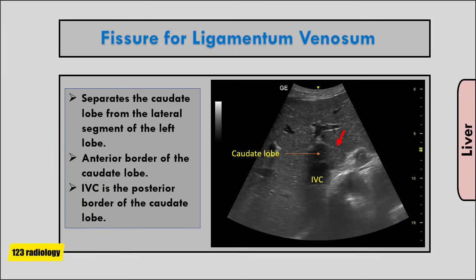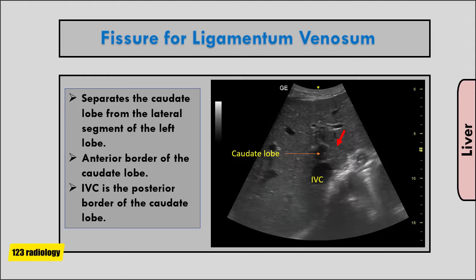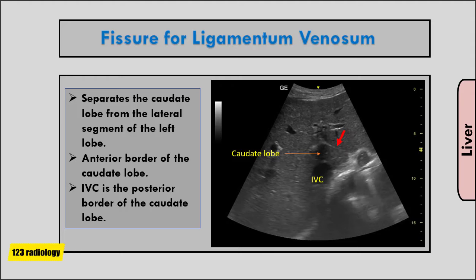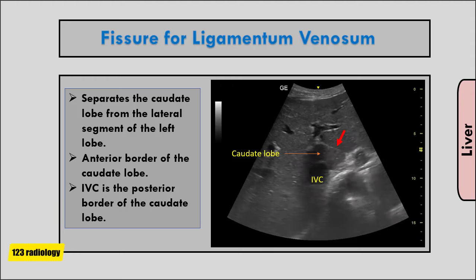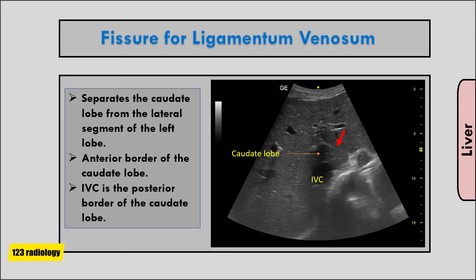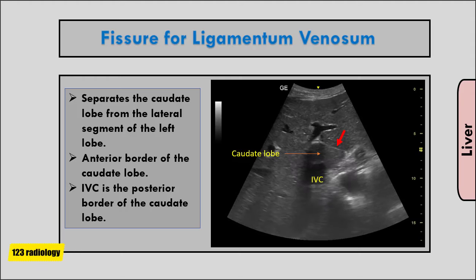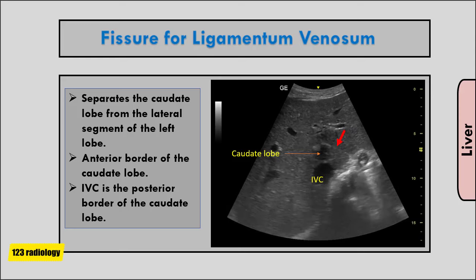Looking at more anatomy of the liver — the fissure for the ligamentum venosum is important because it separates the caudate lobe from the lateral segment of the left lobe. It is the anterior border of the caudate lobe, with the IVC being the posterior border of the caudate lobe.